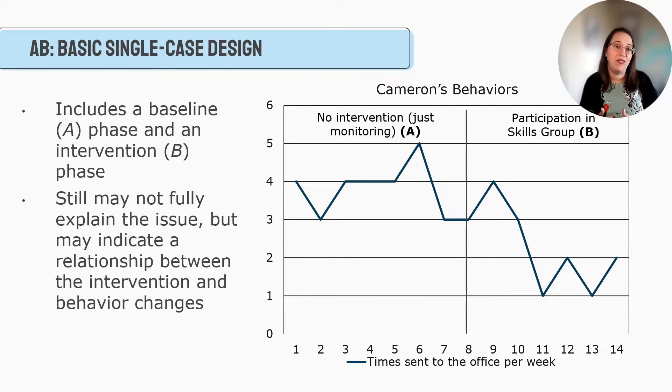Then what we do is we say, okay, what's the intervention? We believe that maybe his acting out has to do with social issues. He's really struggling with social skills. So we think, hey, we're going to put him in a social skills group through the school. So now we're still going to measure him, but he's going to participate in this group. What you can see is that as he's in the skills group for longer, we see a decrease. It looks like approximately towards the end, he's only going to the office one to two times per week. Now the administrator might say that's still too many times, but you can see that's still a decrease compared to where they were. So this is a simple AB design. It's what do people look like before the intervention, and what do they look like with the intervention? It may not still fully explain the issue.